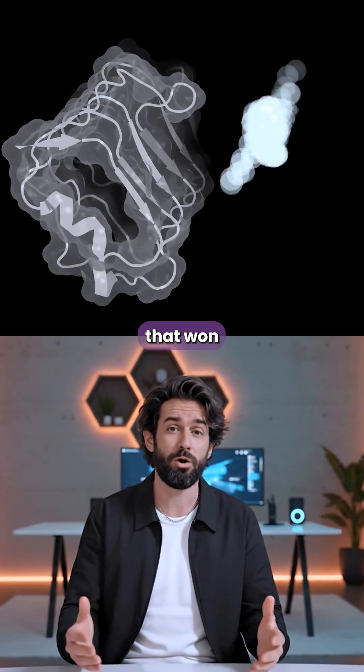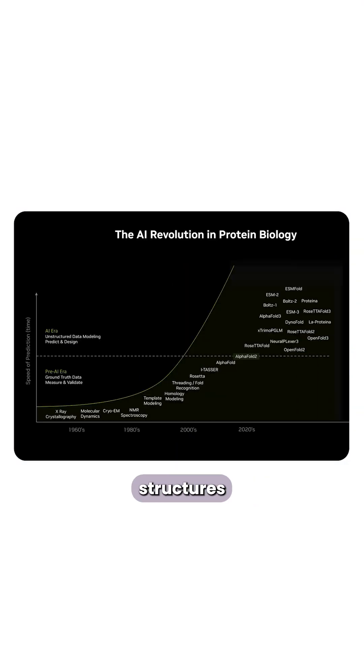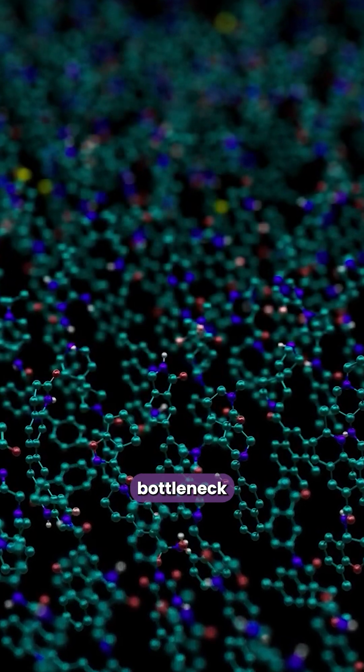This is not just speed. Protein folding models like AlphaFold, the one that won the 2024 Nobel Prize, can now predict complex protein structures in seconds, which removes a major bottleneck in biology.